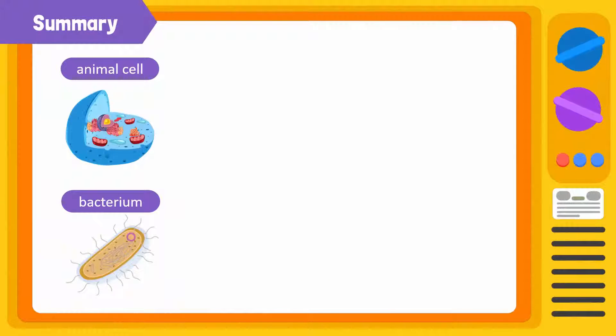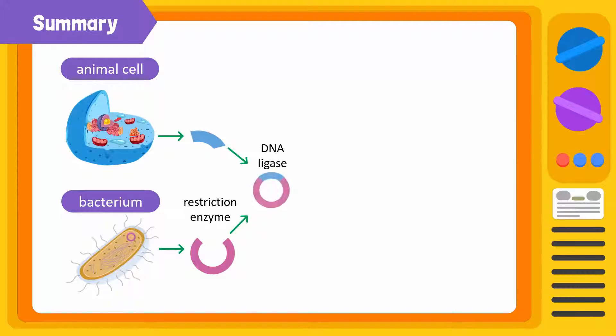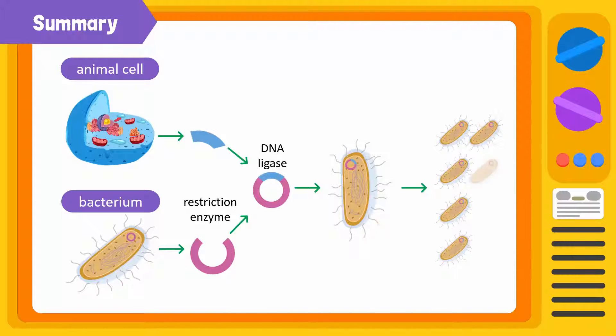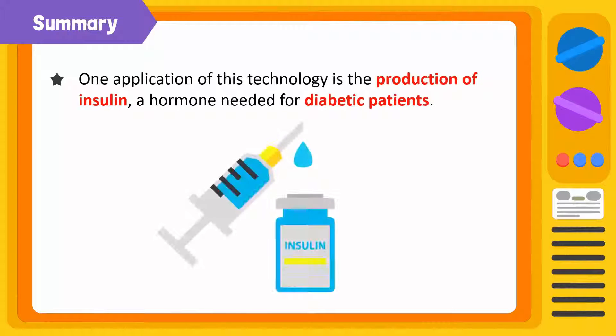Let's summarize. To introduce human genes into a bacterium, we need to isolate the required human gene and a plasmid from a bacterium. Then, with the help of restriction enzymes and DNA ligase, a cut is made in the plasmid and the human gene is joined at the cut. The recombinant plasmid is then reintroduced into the bacterium. After that, the bacterium is cloned so that each bacterial cell contains the human gene. These cells then produce the substances which are coded by the human gene. One application of this technology is the production of insulin, a hormone needed for diabetic patients.